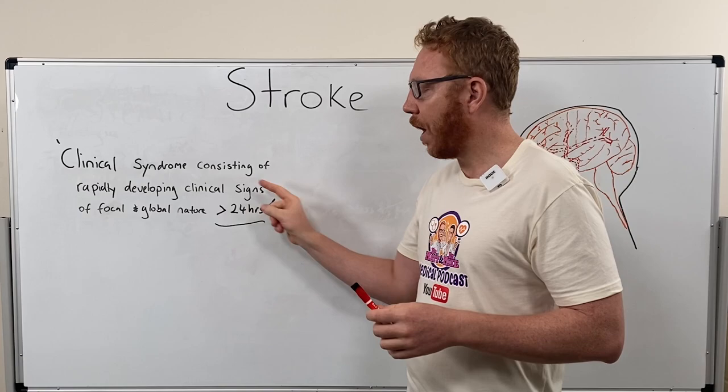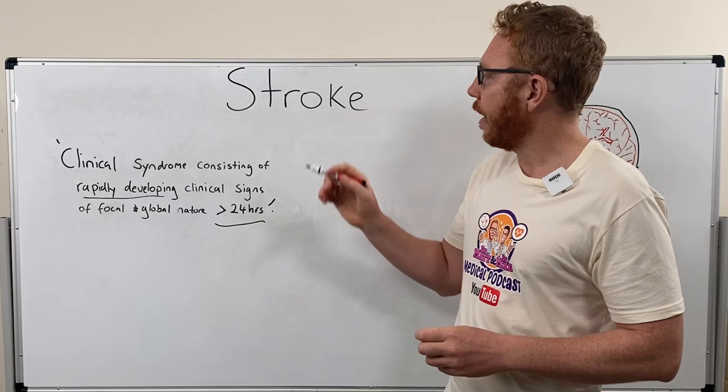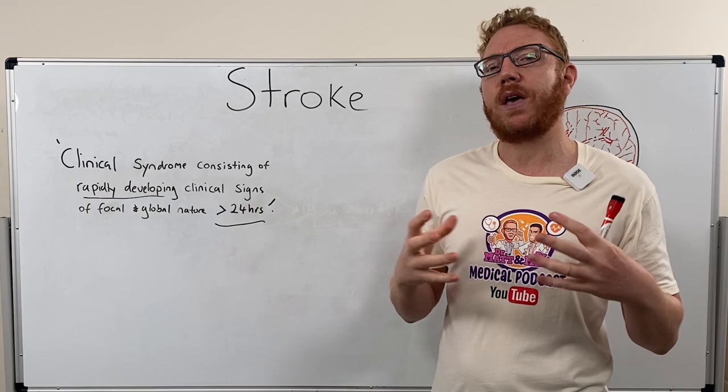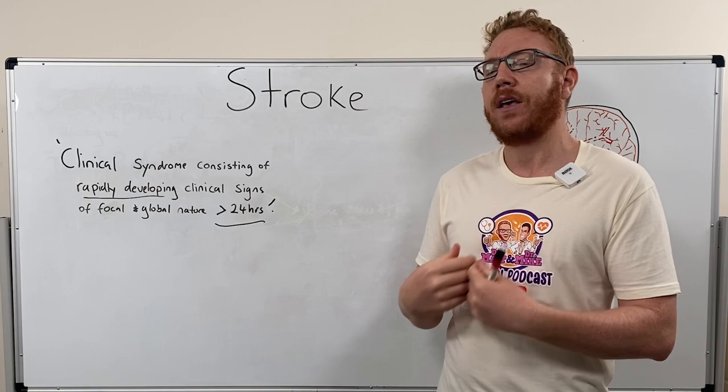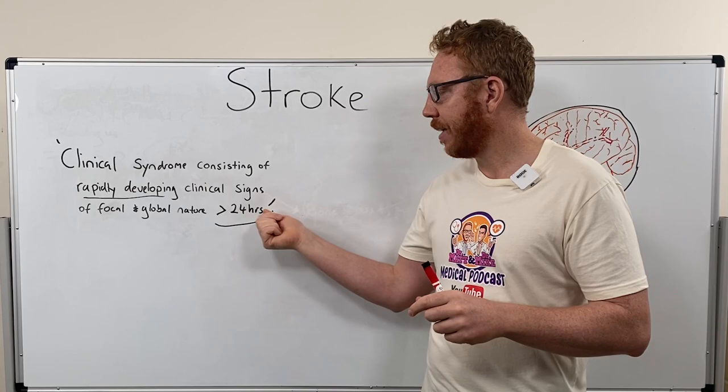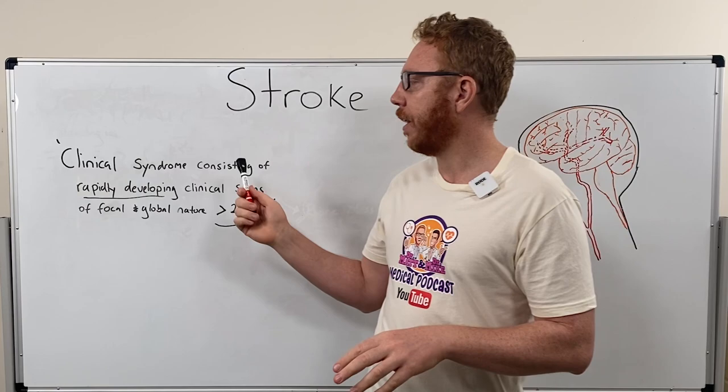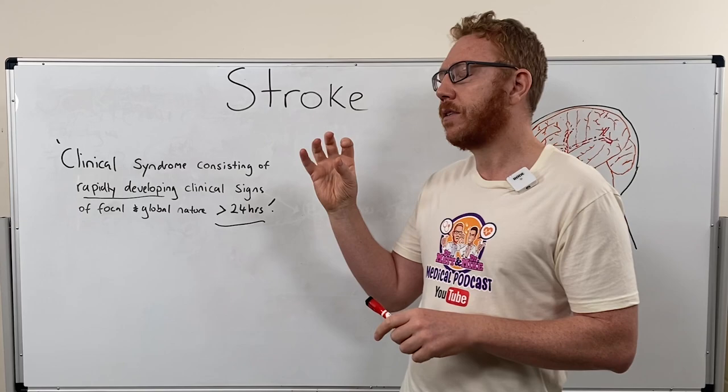The next thing is it's rapidly developing. Stroke is sometimes known as a brain attack, similar to a heart attack where we get death of heart tissue through a lack of blood to the heart. The stroke is the same — part of the brain, because it's longer than 24 hours, has now died. This means you are going to see rapidly changing signs and symptoms, and this is part of the reason it is such a profound injury.